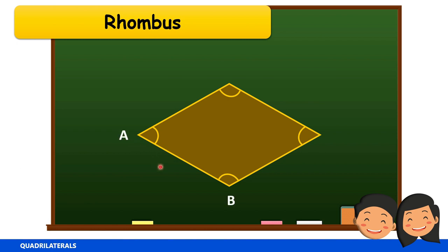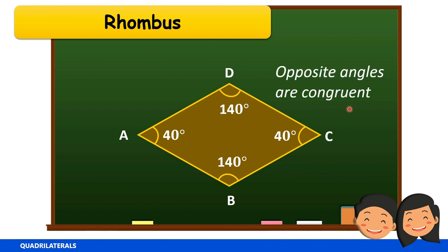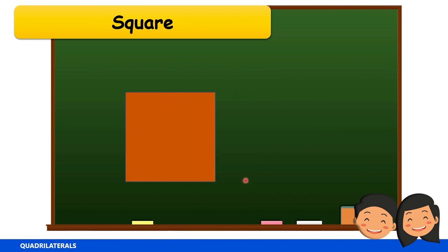For example, with angles A, B, C, and D: angle A is congruent with angle C. If angle A is 40 degrees, angle C is also 40 degrees. If angle D is 140 degrees, angle B also measures 140 degrees. Notice that in a rhombus, the four angles are not all congruent — there is one pair of obtuse angles and one pair of acute angles. In a rhombus, opposite angles are congruent.